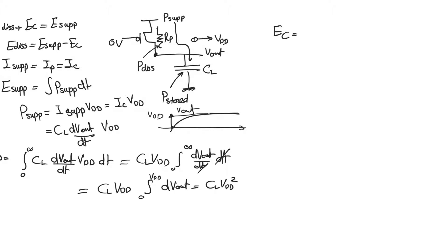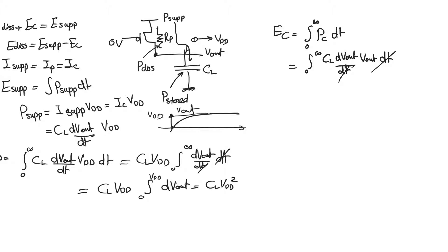Now let's find the energy stored in the capacitor. The energy stored in the capacitor is the integral from zero to infinity of the power of the capacitor dT. The power in the capacitor equals the product of the current C_L · dV_out/dT times the voltage on the capacitor, which is V_out — not V_DD. Again, dT cancels, and we can only take C_L outside the integral. We integrate V_out dV_out with limits changed from zero to V_DD, giving energy stored in the capacitor equal to C_L · V_DD² / 2.